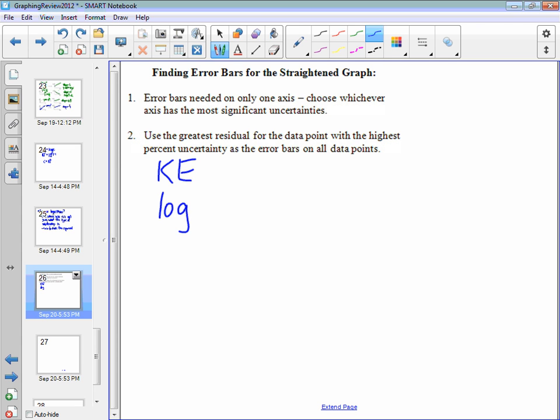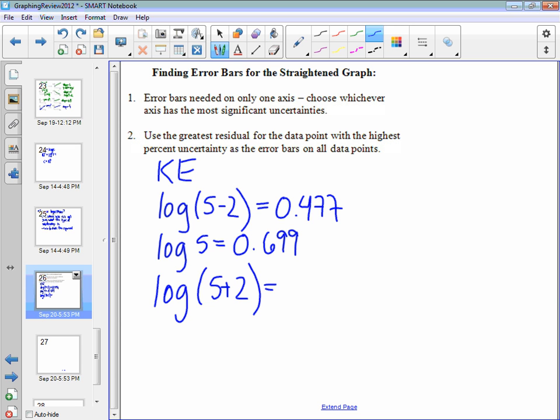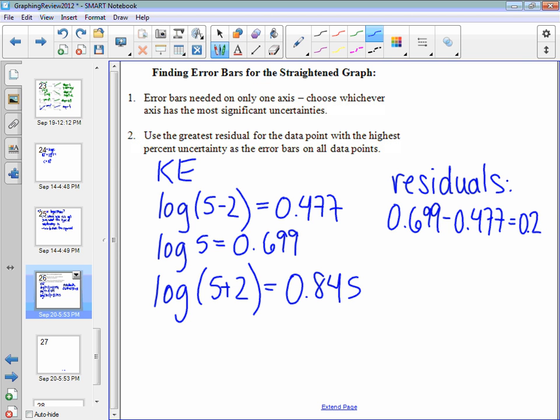And to find the greatest residual, we're going to take the log of the smallest value, which would be 5 minus 2, so log 3, that's going to be equal to 0.477. The actual value of that measurement in the log log plot would be 0.699, and the log of the larger value there, 5 plus 2, log 7, which is 0.845. Checking the residuals, 0.699 minus 0.477 gives us 0.222, and the other residual would be 0.845 minus 0.699, that gives us 0.146. So what we've done here, guys, is we've figured out where the greatest uncertainty is occurring. It's occurring at the measurement of the kinetic energy at 5 joules.